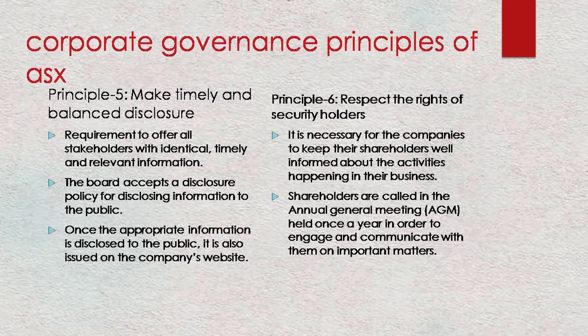The next principle 6 is: respect the rights of security holders. An entity should provide information about itself and its governance to investors via its website, so it should be very transparent. An entity should also disclose how it facilitates and encourages participation at meetings of security holders. A listed entity should give security holders the option to receive communication from and send communication to the entity and its security registry electronically.